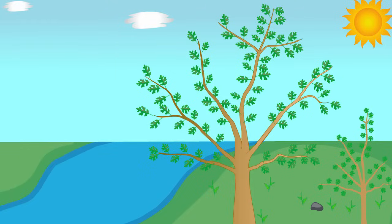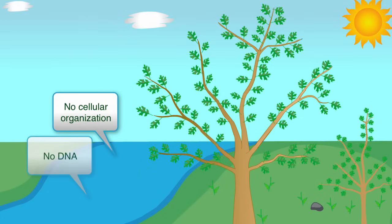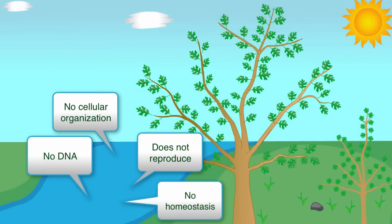In contrast, let's consider the creek running alongside the path. While it may grow larger or change size due to increased rainfall or other weather conditions, it is not made up of cells. Water does not contain DNA. It doesn't reproduce or maintain homeostasis. Because water doesn't share these characteristics of life, it is considered non-living.